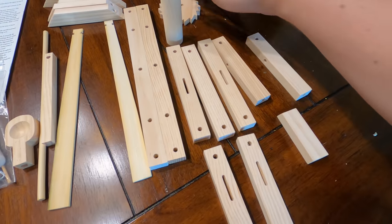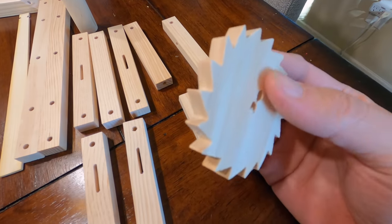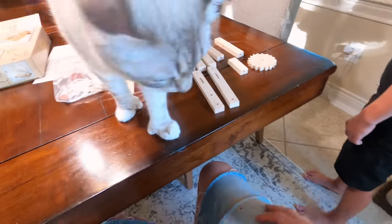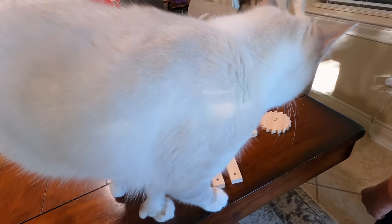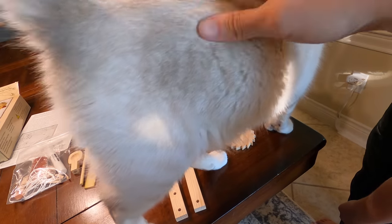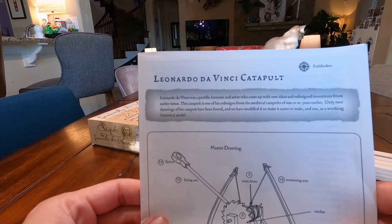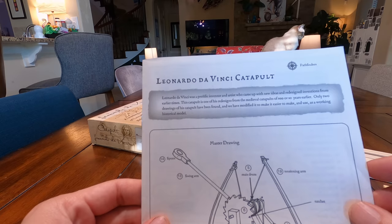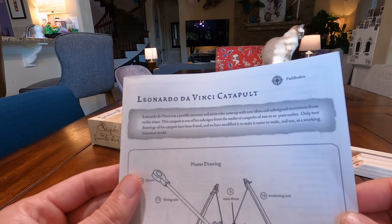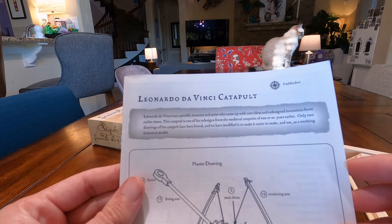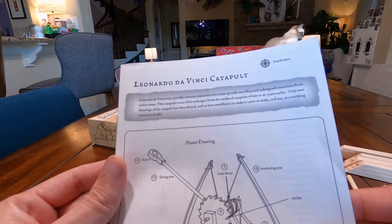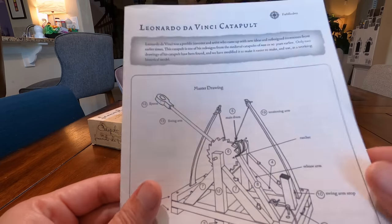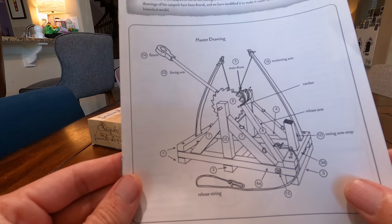It looks like proper wood, which is really cool. Me and Bees both agree that this is definitely the coolest piece, right? And Marshy's birthday was actually two days ago. We are going to be celebrating that soon. Big one year birthday. Happy birthday, girl. Da Vinci was a prolific inventor and artist who came up with new ideas and redesigned inventions from earlier times. This catapult is one of his redesigns from the medieval catapults of 600 or so years earlier. Only two drawings of this catapult have been found.